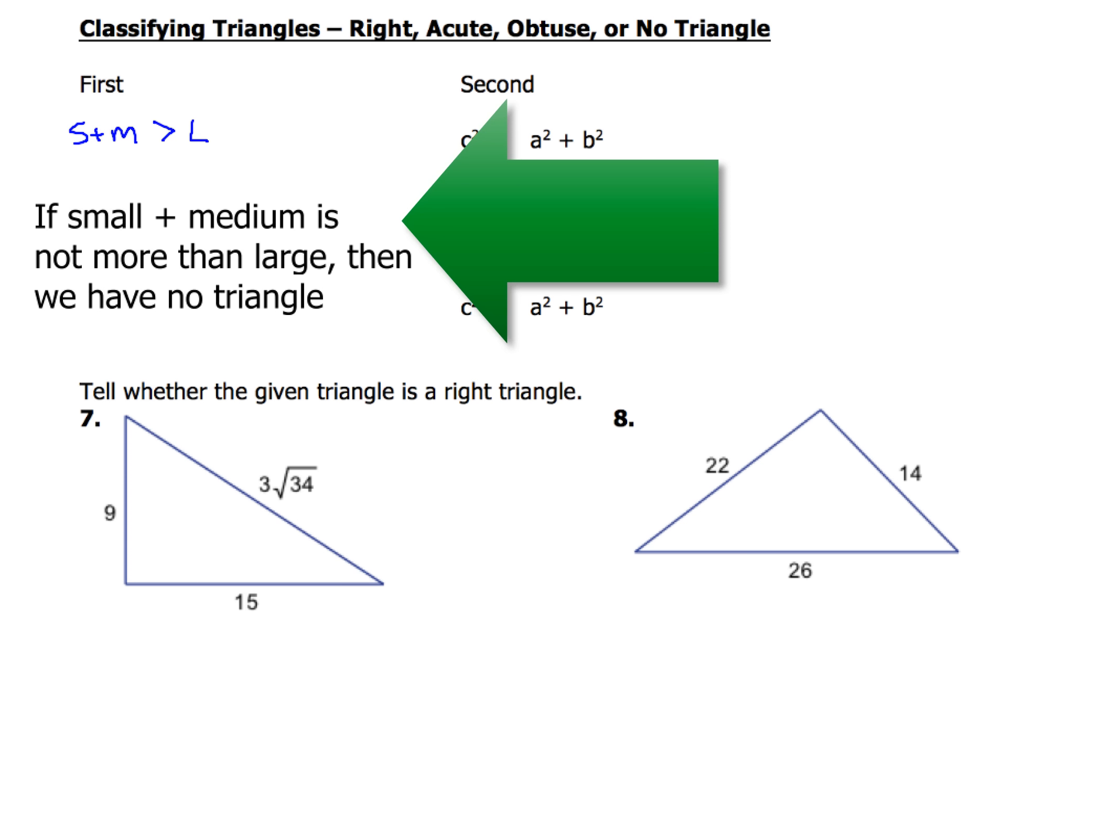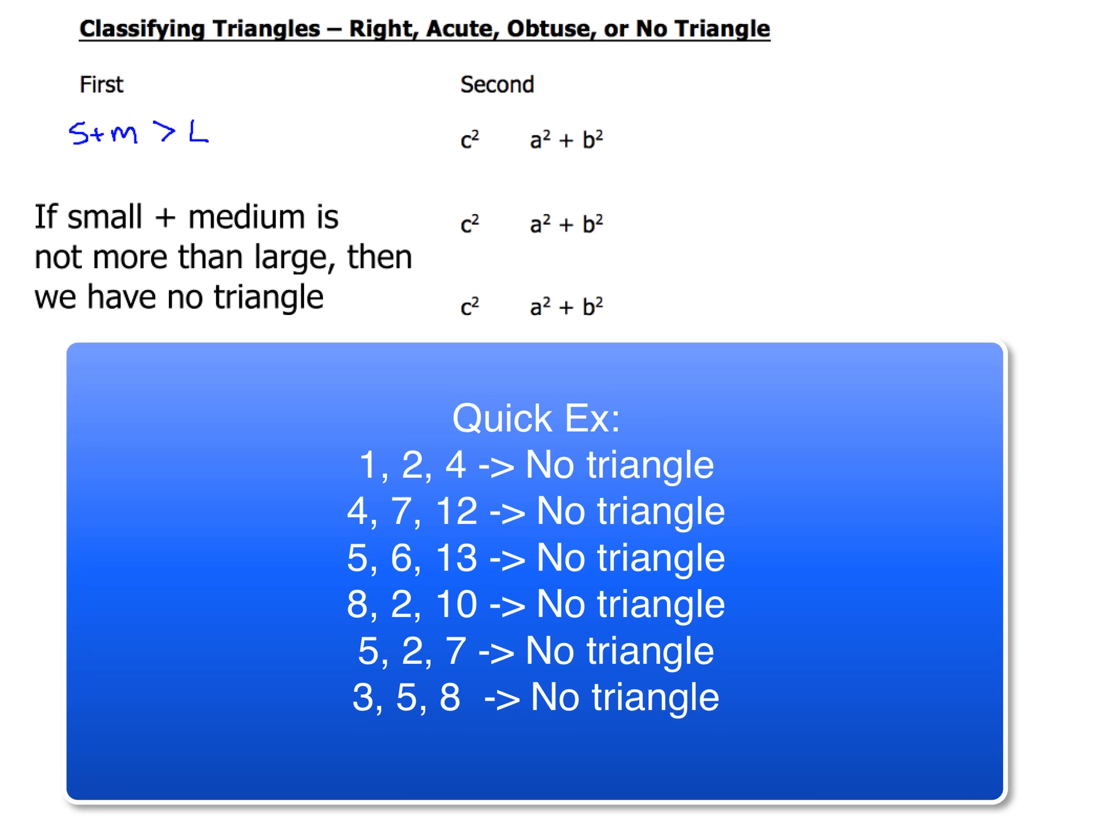So the first thing you want to do is check it out. Do the small and medium, and that's what I use S+M for. Do the two smaller sides add up to be more than whatever the biggest side is, which would always be your hypotenuse if it is a right triangle.